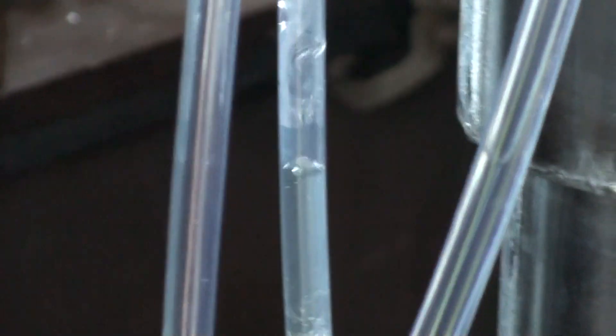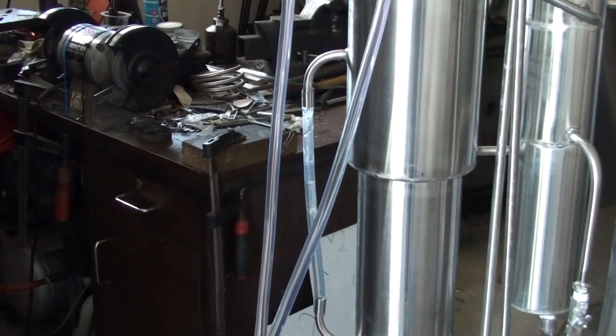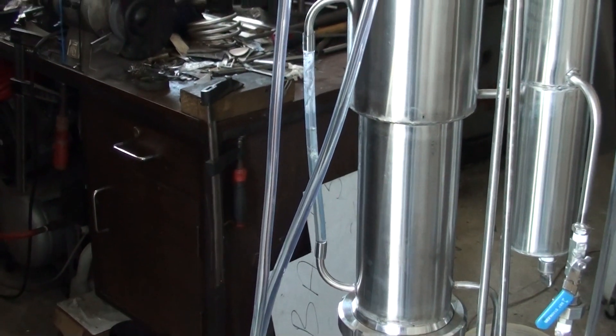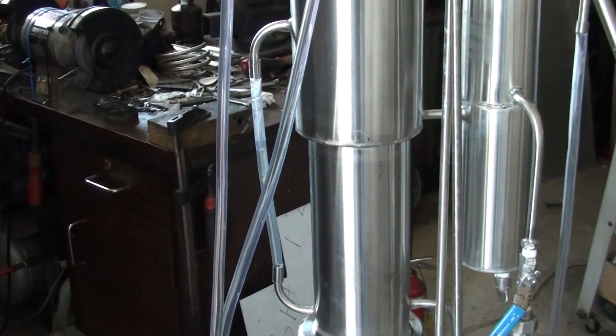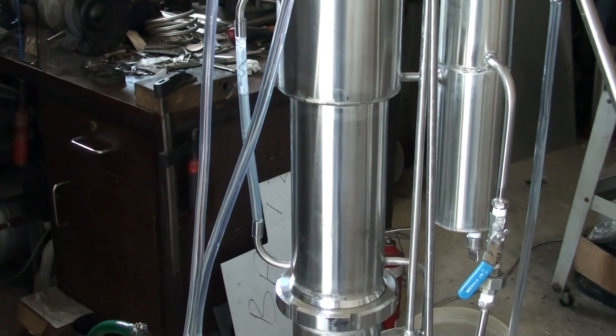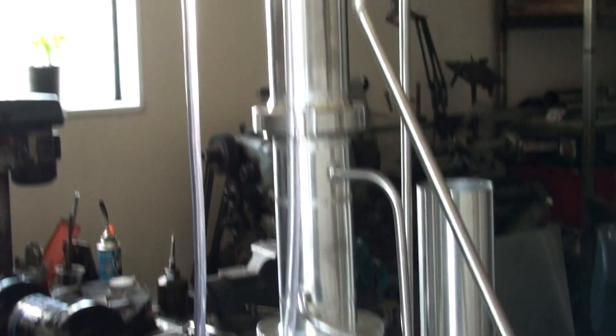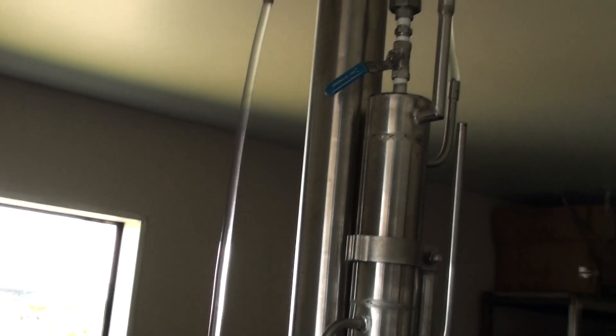This valve controls the amount of wash within the column. You can see it here. It's the wash supply valve, and you're supposed to keep about two-thirds of this tube filled with wash. Once you adjust it, you can make sure everything is fine.